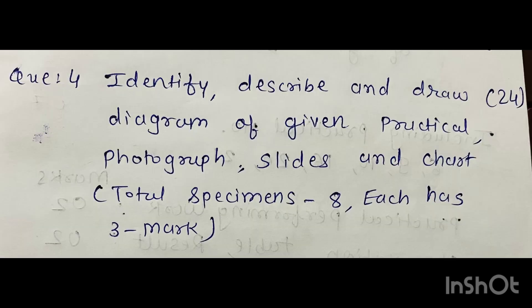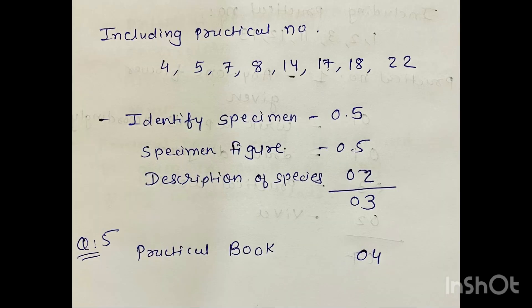Now, question number four - in this question you can score maximum marks because limited practicals and specimens will be there. Question number four will be asked from practical numbers 4, 5, 7, 8, 14, 17, 18, and 22. Here you can score maximum because it will only be asked from the above practical numbers.